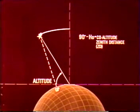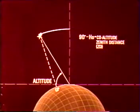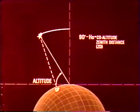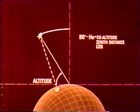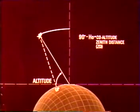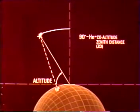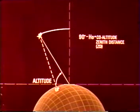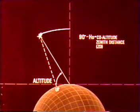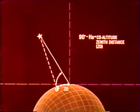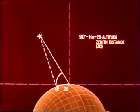The difference between 90 degrees and the observed altitude of a celestial body is called co-altitude, or zenith distance. This is an important angle to remember when you begin to use celestial navigation to plot a line of position, because zenith distance can also be expressed in nautical miles on the surface of the Earth.